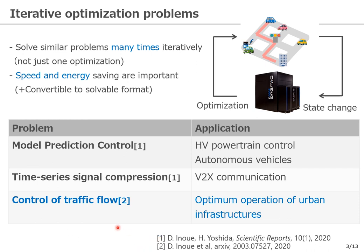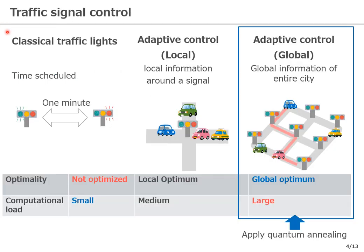Today's topic is the traffic flow control problem, in which we try to determine the color of traffic signals taking into account all the information of the entire city. Normally, the color of a traffic light is scheduled — that is, the color changes when a certain time has passed, for example, every one minute. Although this simple control requires only a small computational cost, it is not optimal with respect to the flow of vehicles.